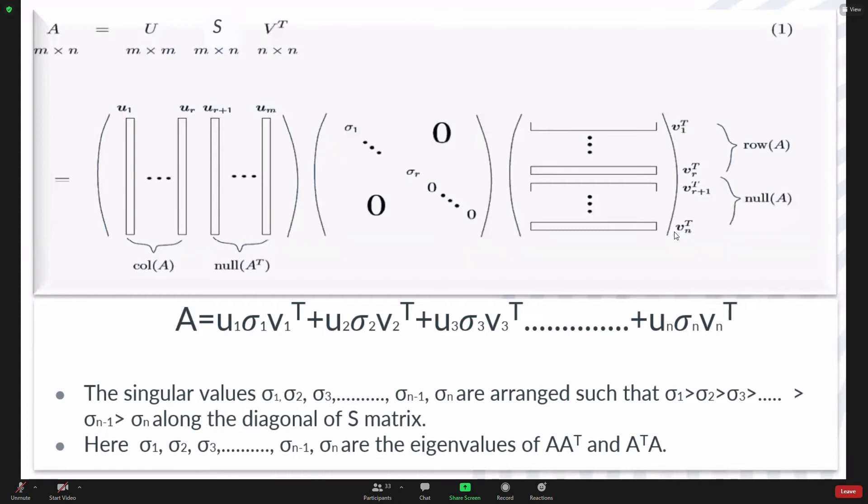The product is then simplified to get the expression written below the image. Here, the singular values σ1, σ2, σ3 up to σn are arranged such that σ1 > σ2 > σ3 > ... > σn along the diagonal of S. These values are also the eigenvalues of AA^T and A^T A.